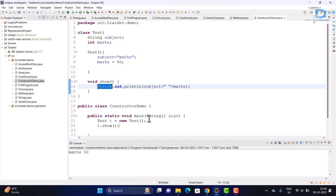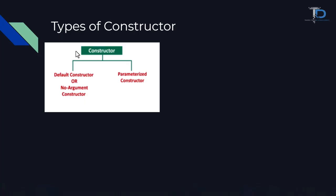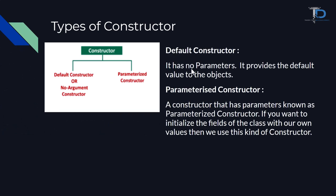I hope you can understand this chapter on Constructor. Now, we will understand what are the types of Constructor. We have two types of Constructor in Java: the first is the default constructor and the second is the parameterized constructor. The default constructor has no parameters and it provides the default value to the object.